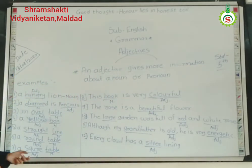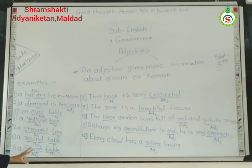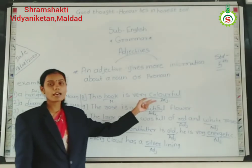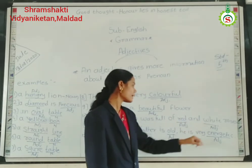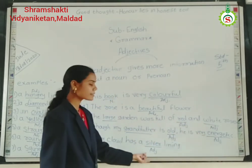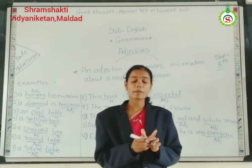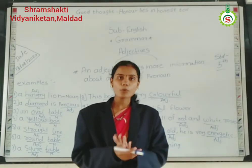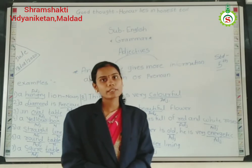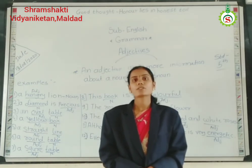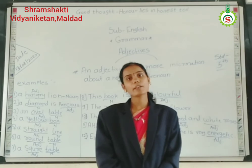So students, in all these sentences the words hungry, precious, oval, yellow, round, square, colorful, beautiful, red, large, white, old, energetic, and silver are all adjectives — meaning these words give more information about a noun. You understand and can now identify adjectives in sentences. Write more adjective sentences at home in your notebook.